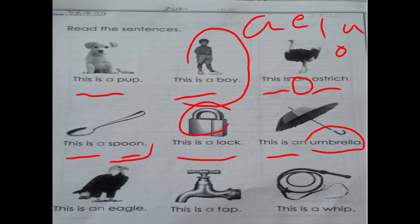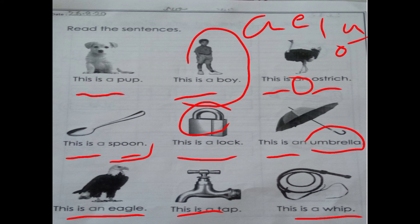'This is an umbrella' — umbrella's first sound is 'u', and 'u' is a vowel. 'This is an eagle' — because eagle's 'e' is a vowel, and with a vowel we use the article 'an'. 'This is a tap'. 'This is a whip'. So this page — page number 107 — you have to read.